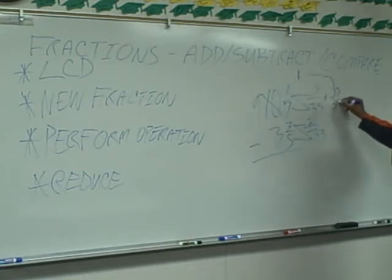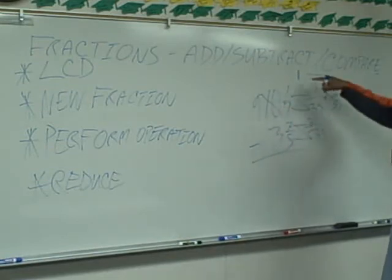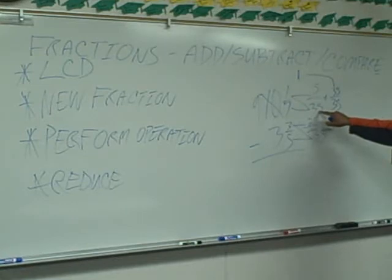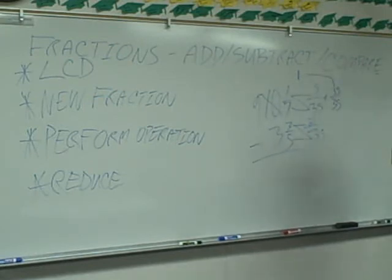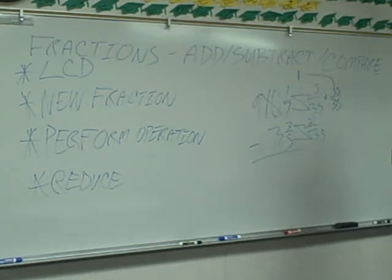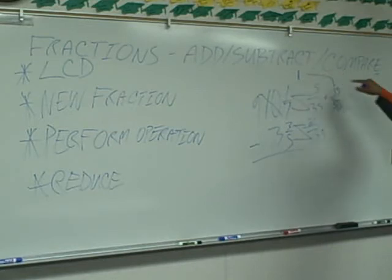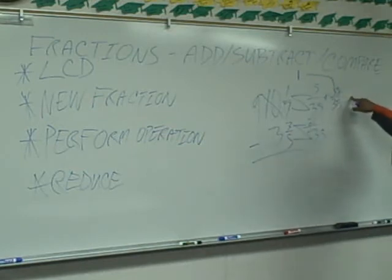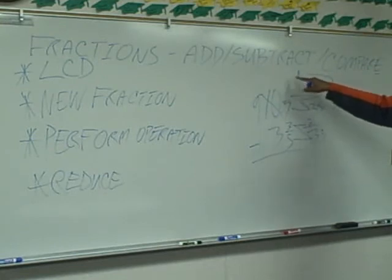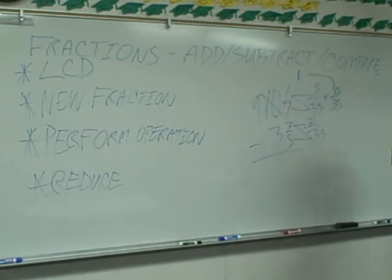This is a very important concept. So we borrowed one, but now we have to express that one in terms of the denominator, in order to add it in. Because when you're adding fractions, the name of the game is lowest common denominator first — the denominators have to be the same. Why can I express one as thirty-five thirty-fifths? Because thirty-five divided by thirty-five is one. So I can express my one in terms of whatever the denominator is. If the denominator was forty-two, I'd have forty-two forty-twos. If the denominator was thirty-three, I'd have thirty-three thirty-threes. But in this case the denominator is thirty-five, so I'm going to express my one that I borrowed as thirty-five thirty-fifths.